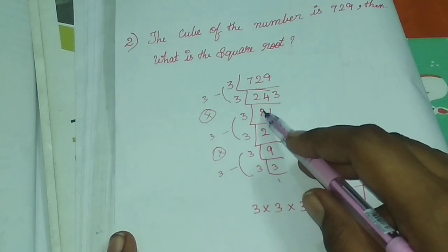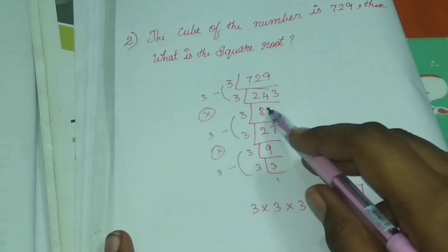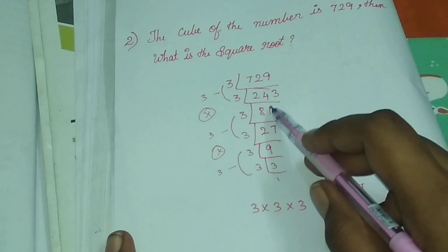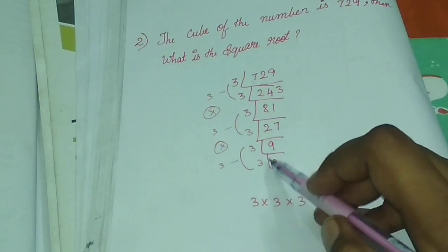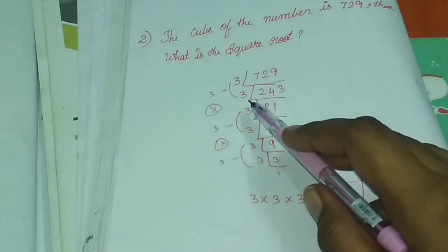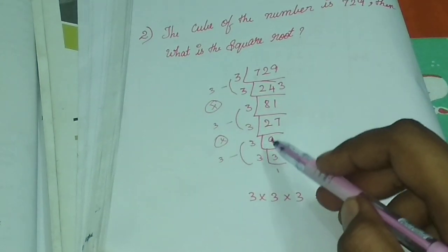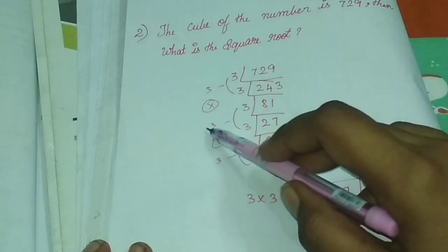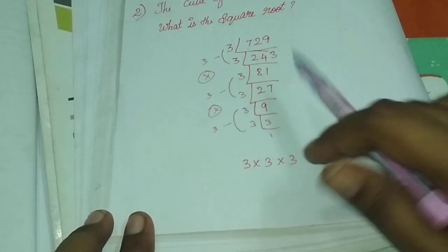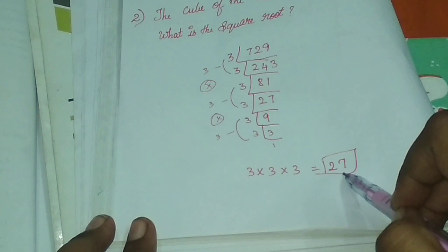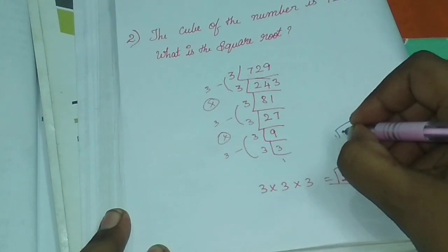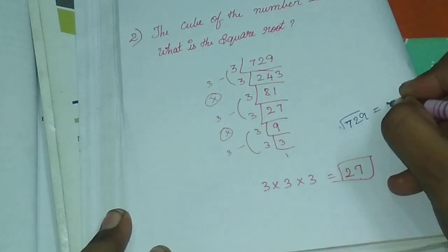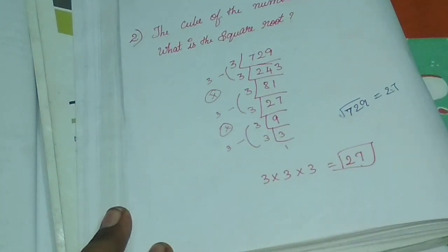6 is equal to 6, 2 is equal to 7, 7 times 3. And 27 is equal to 9. So we can see the square root of 729 is equal to 27.